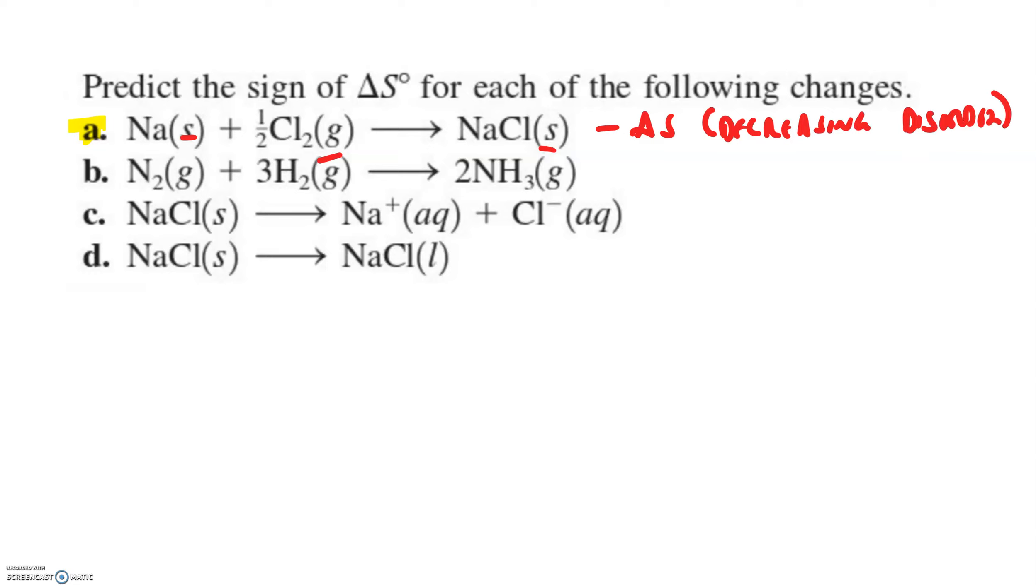How about part B where we've got gaseous nitrogen combining with gaseous hydrogen. Look, the exact opposite of the Haber process. Notice that we're going from four molecules to two. Everything's a gas, but we're going from more molecules to fewer. That's a decrease in disorder. Here in part C, we're going from solid sodium chloride to aqueous sodium, aqueous chlorine, obviously the increase in disorder. And finally, going from a solid to a liquid is requiring a lot of heat to melt sodium chloride. That's an increase in delta S.